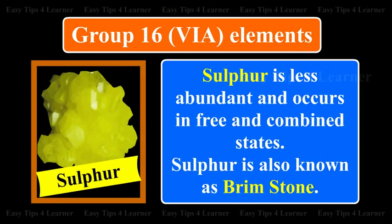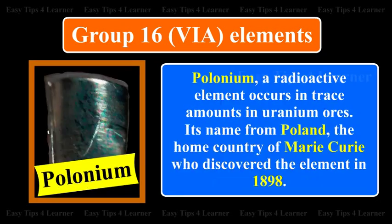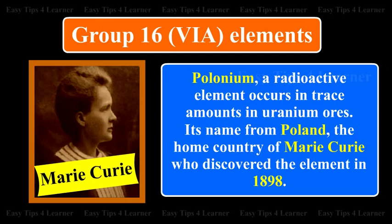Sulphur is less abundant and occurs in free and combined states. Sulphur is also known as brimstone. Polonium is a radioactive element that occurs in trace amounts in uranium ores. It is named from Poland, the home country of Marie Curie, who discovered the element in 1898.